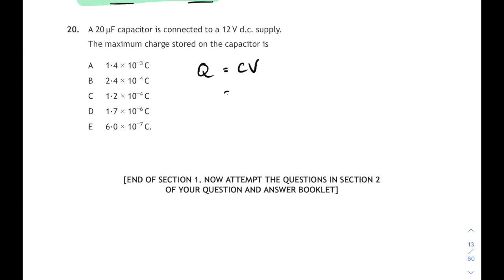Substitute in C for capacitance. 20 times 10 to the minus 6 times the voltage is 12 volts. Gives us an answer of 2.4 times 10 to the minus 4 coulombs. So that's answer B.